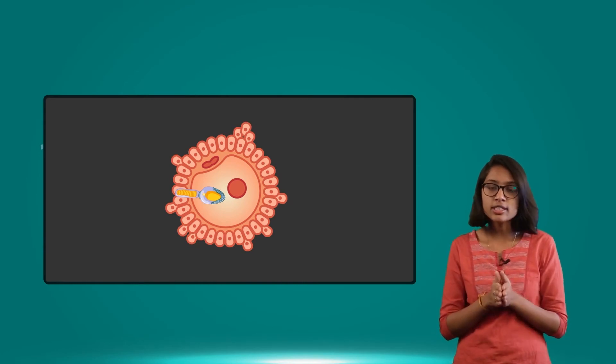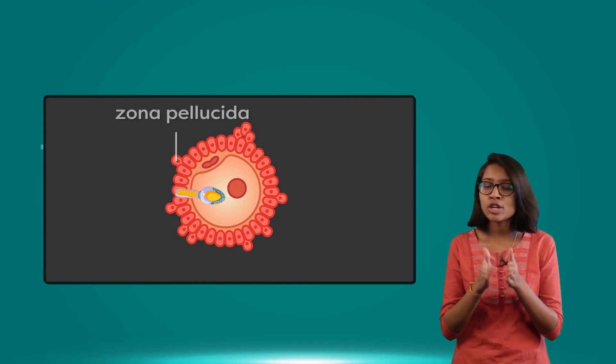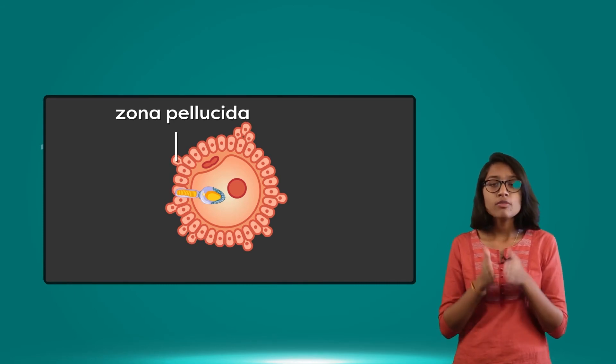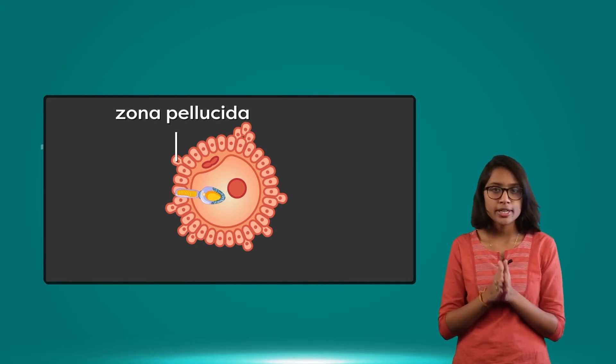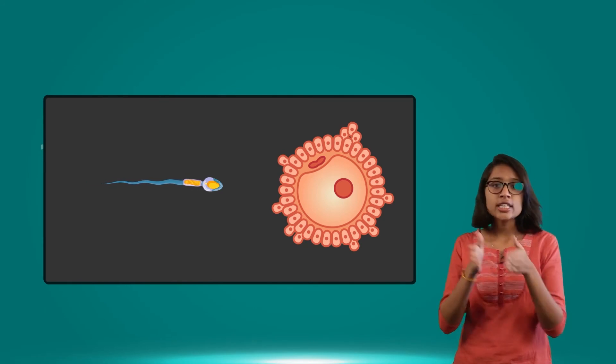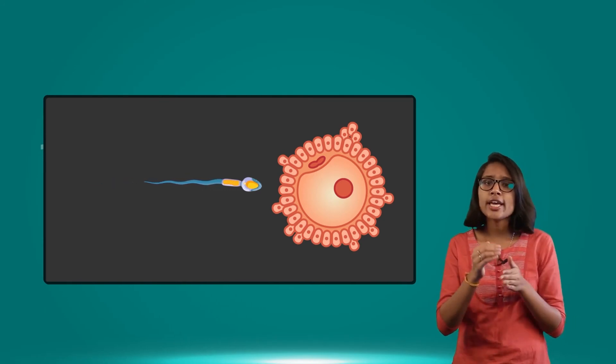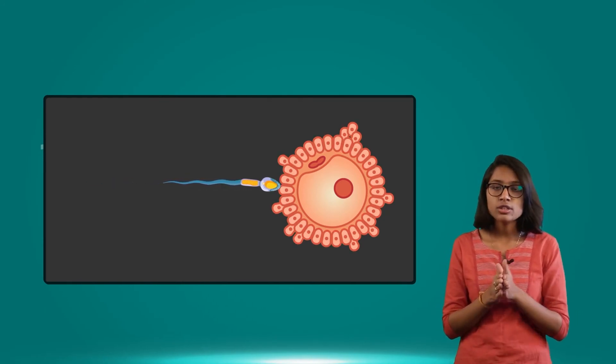The ovum has a layer called zona pellucida, and we can also see a plasma membrane. When the sperm wants to enter the ovum, these two layers act as barriers.